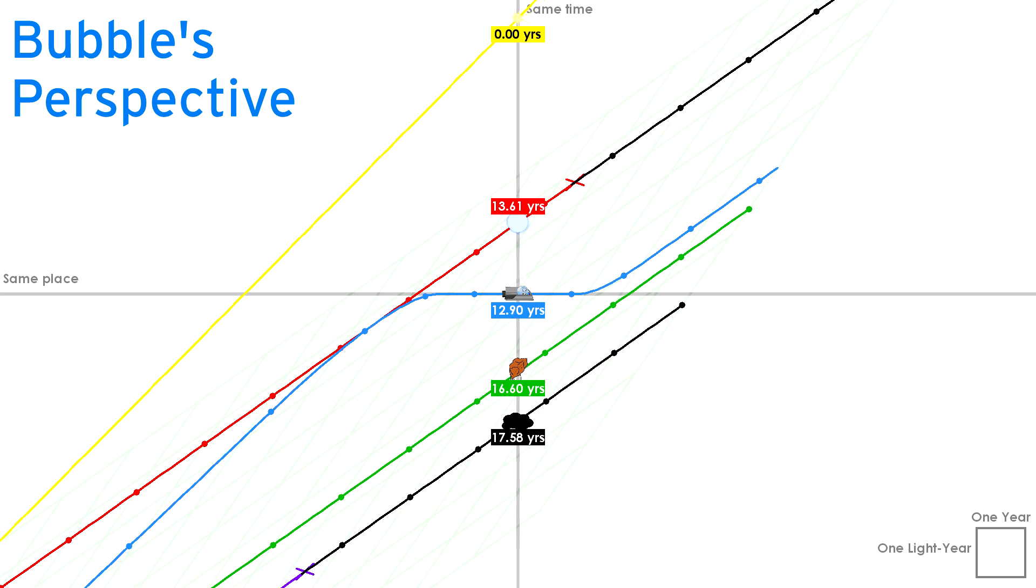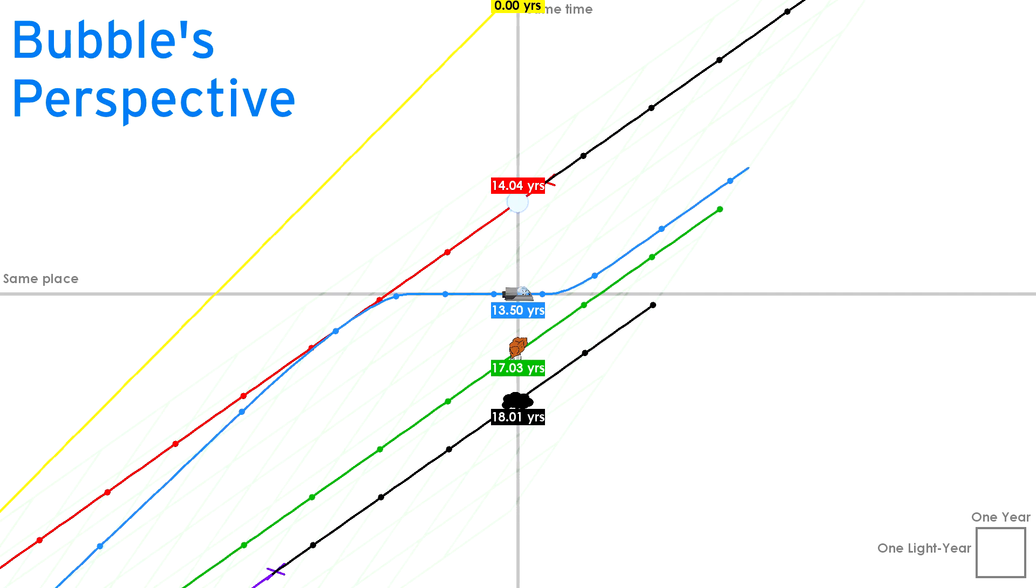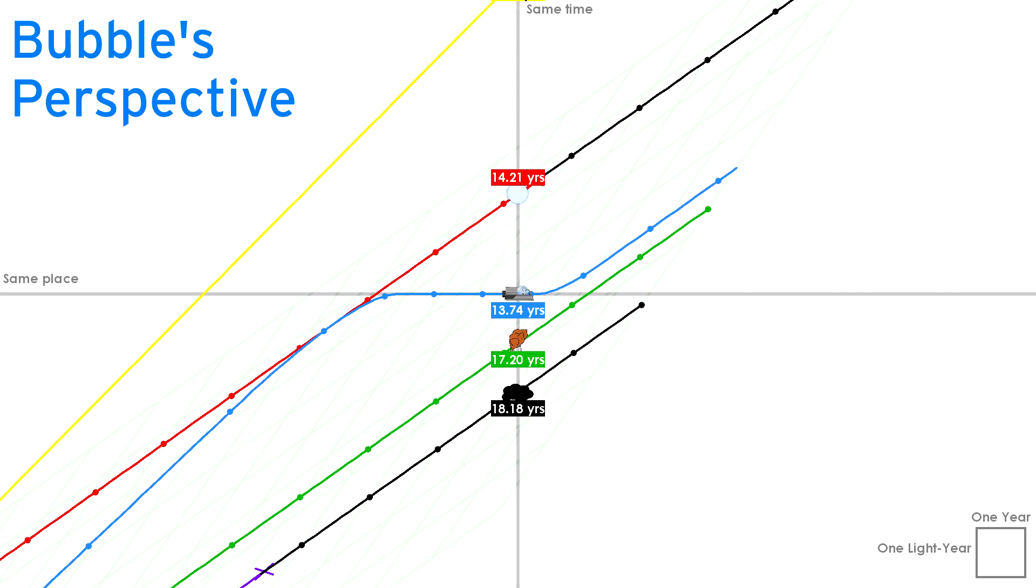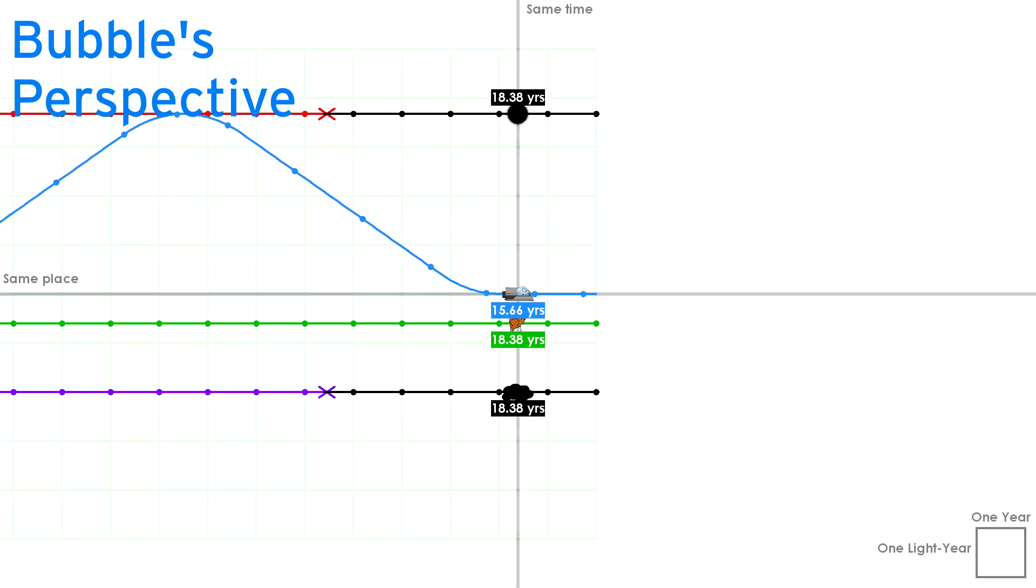That means that looking at this dark vertical band in the middle of the screen tells you exactly Bubble's frame of reference at that moment. Okay, this simulation has been way too slow, so let's watch it again but a bit faster.